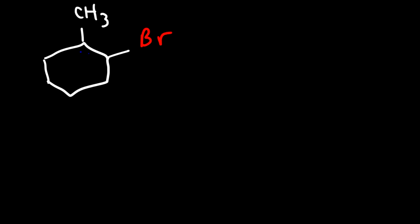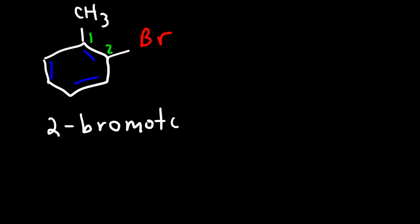Now we have two different groups attached to a benzene ring. To name this compound, we first identify the parent name. A benzene ring plus a methyl group is called toluene, so toluene is the parent name, and the methyl group is carbon 1. Therefore, we call this 2-bromotoluene, or ortho-bromotoluene.